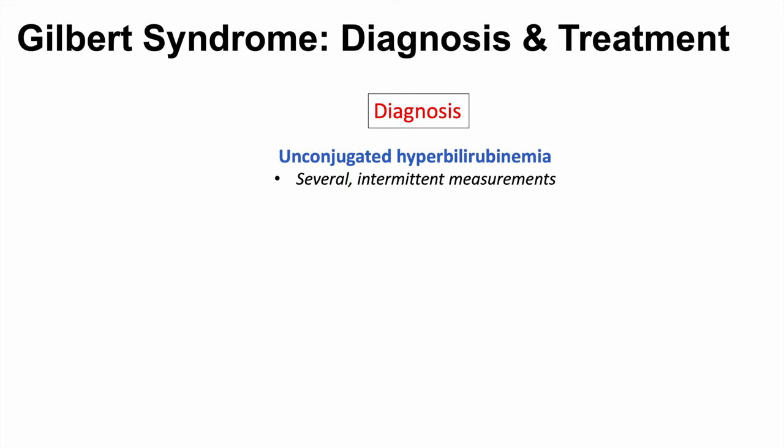How is Gilbert syndrome diagnosed? Clinicians diagnose it by checking bilirubin during episodes of jaundice and finding high levels of unconjugated bilirubin — unconjugated hyperbilirubinemia. This is seen intermittently across several episodes. Diagnosis is further supported when other blood work is normal, such as liver enzymes like AST and ALT being normal, and there being no evidence of hemolysis.